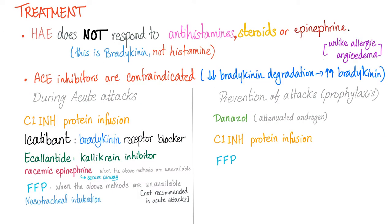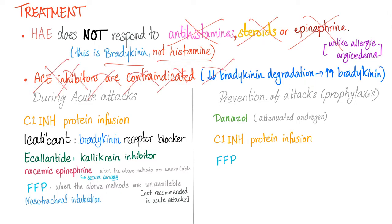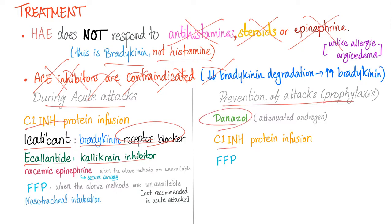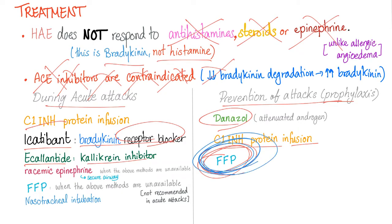How to treat hereditary angioedema? This is not an allergy — don't give antihistamines, steroids, or epinephrine. ACE inhibitors are contraindicated because they will increase bradykinin. During the acute attack, infuse C1 inhibitor. You can use icatibant, which is a bradykinin receptor blocker, or ecallantide, which is a kallikrein inhibitor. Fresh frozen plasma is better used in prophylaxis rather than acute attacks, but give FFP and racemic epinephrine if nothing else is available.